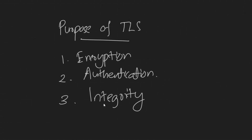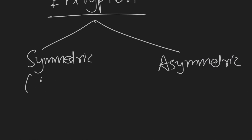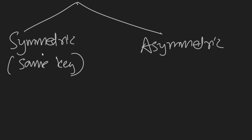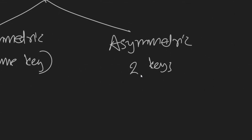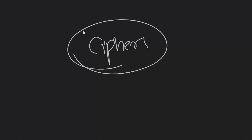Before talking about how these are achieved, we need to cover some terms. Encryption is converting human-readable plain text into something unreadable, ensuring only the sender and recipient know the content. There are two types: symmetric encryption uses the same key for both encryption and decryption — a single key. Asymmetric encryption uses two keys: if you encrypt with one key, you decrypt with the other, and vice versa. This is also called public key encryption — the same concept used for SSH with a private key and a public key.